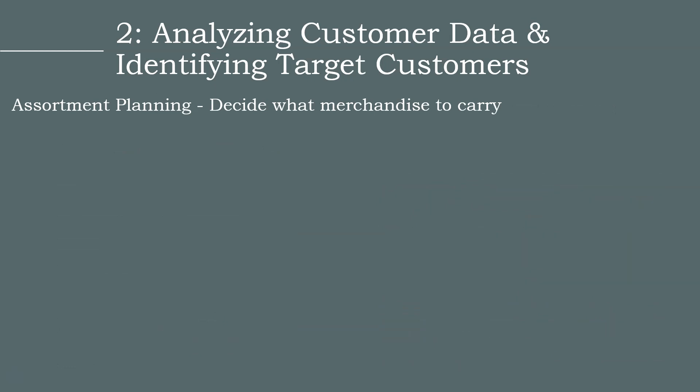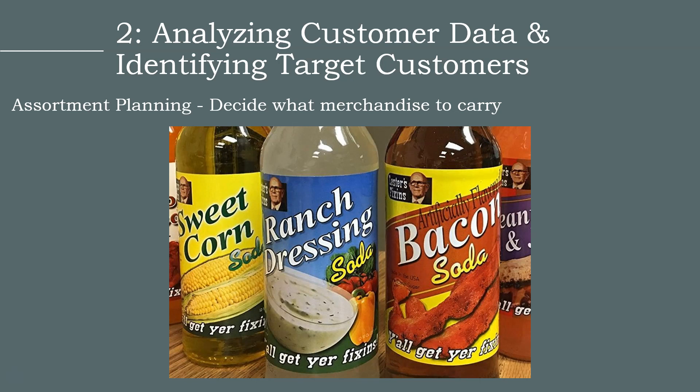Assortment planning is the final component of our retail analytics. Retailers use the insights from the market basket and targeting promotions analyses, as well as customer data collected in Step 1, to determine the products they should carry. By analyzing the products purchased by their most valuable customers, retailers can ensure these items are always available in store. For example, a customer who regularly purchases sweet corn, ranch dressing, or bacon-flavored soda might be rare.